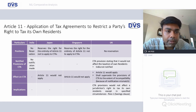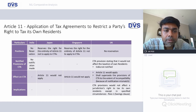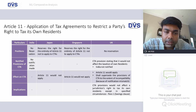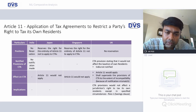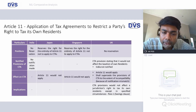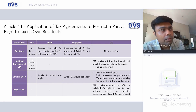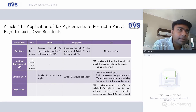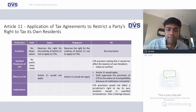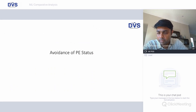Article 11 covers the application of tax agreements to restrict a party's right to tax its own residents. India has not made any reservation. Japan and Singapore have said this will not apply. UK, similar to India, has not made any reservation. So for India-Japan and India-Singapore, Article 11 shall not apply. For India-UK, Article 11 shall apply and shall supersede the CTA provisions, which effectively means the CTA provisions would not affect a jurisdiction's right to tax its own residents except in specific circumstances provided in the savings clause — similar to how the US has a global right to tax its citizens.